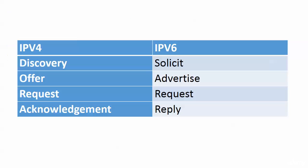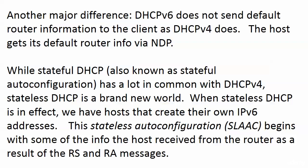There are some differences, including the names of three of the DHCP packets. If you've been using the acronym DORA to remember the IPv4 packet order — Discovery, Offer, Request, Acknowledgement — in IP version 6 you get to sound like a pirate, saying SARR: Solicit, Advertise, Request, Reply. Request is the only packet name shared between DHCPv4 and DHCPv6.